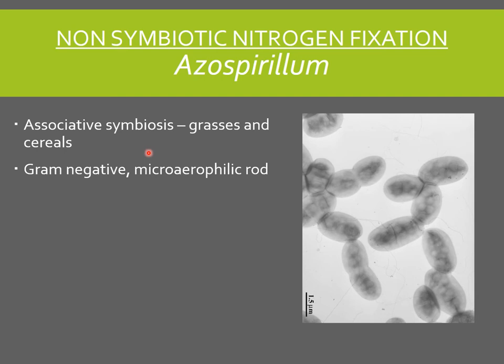Azospirillum is gram-negative and is a microaerophilic rod-shaped organism. The rods are slightly curved with a length of 2 to 3.8 micrometers and a diameter of 1 micrometer. The organism also contains PHB granules and is found in the rhizosphere of several grasses and cereal crops. It also shows the presence of NIF genes involved in nitrogen fixation and HUP genes involved in the production of hydrogenase enzyme for efficient nitrogen fixation. The organism can be isolated on Azospirillum medium or on a malate medium supplemented with minerals.